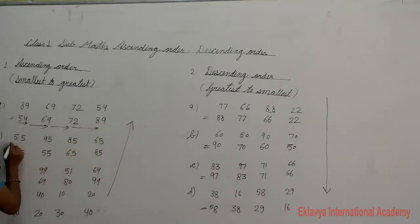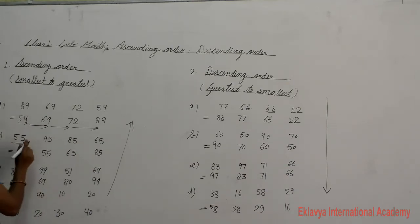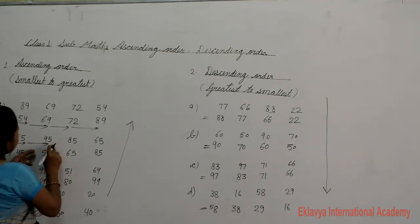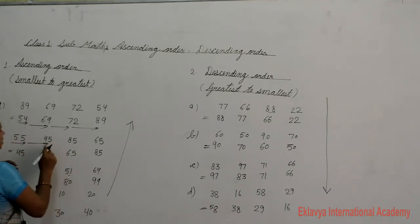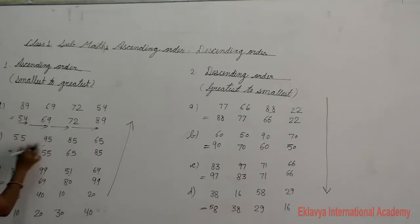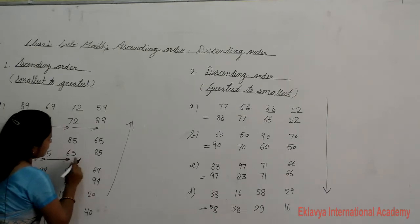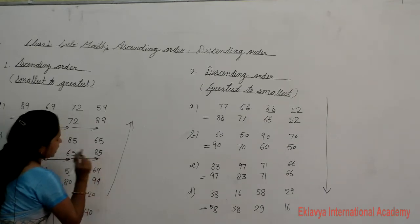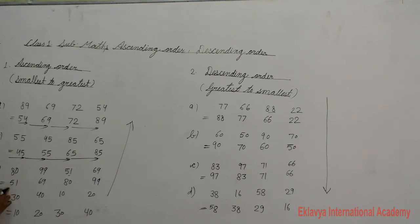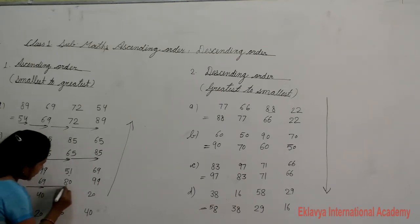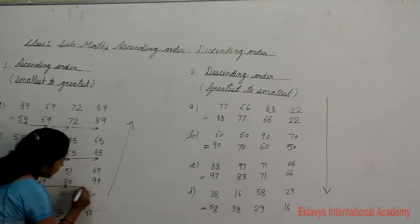Next: for 55, 45, 85, 65 — we choose the smallest number first in ascending order. Smallest is 45, then 55, then 65, then 85. And for 80, 99, 51, 69 — smallest is 51, then 69, then 80, then 99.